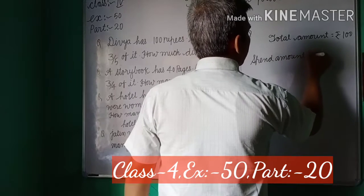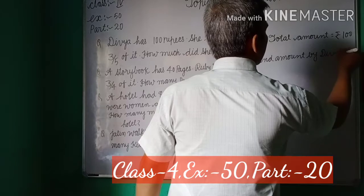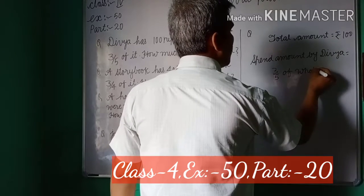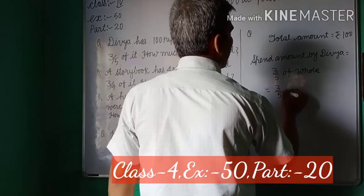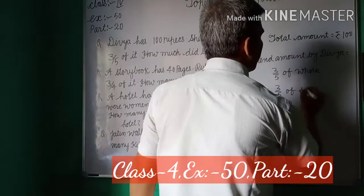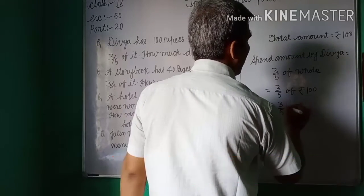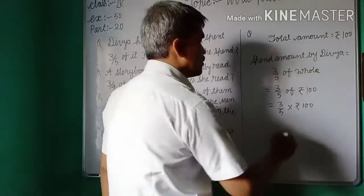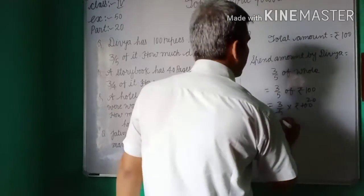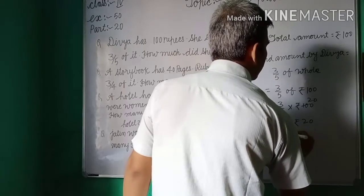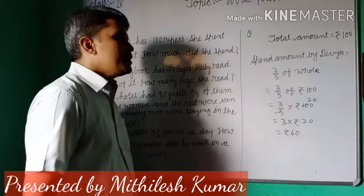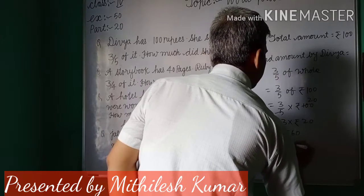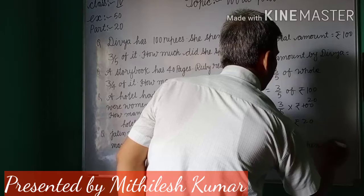Amount spent by Divya is equal to 3 by 5 of the whole, that means 3 by 5 of 100 rupees. So we multiply 3 by 5 with 100. The denominator 5 goes into 100 giving 20, and 3 multiplied by 20 equals 60 rupees. Hence, rupees 60 are spent by Divya.